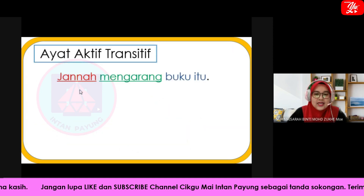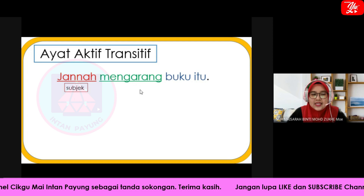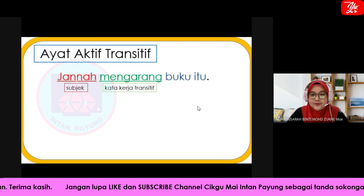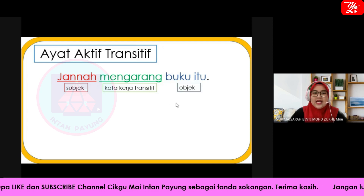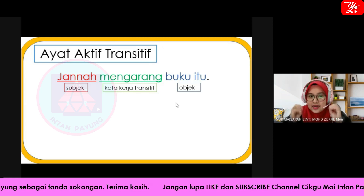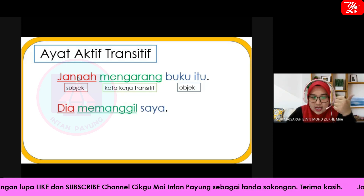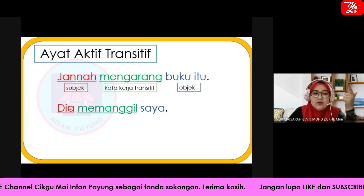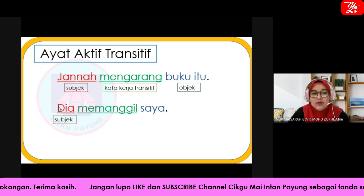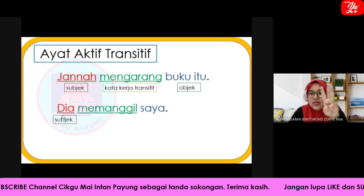Contoh kedua: Janah mengarang buku itu. Janah ialah subjek, mengarang ialah kata kerja transitif, dan buku itu ialah objek. Jadi ayat ini ialah ayat aktif transitif. Dalam bahagian subjek, kita boleh guna kata ganti diri — pertama, kedua, atau ketiga. Kali ini cikgu guna kata ganti diri ketiga, iaitu 'dia' (D-I-A).